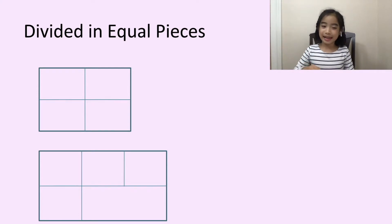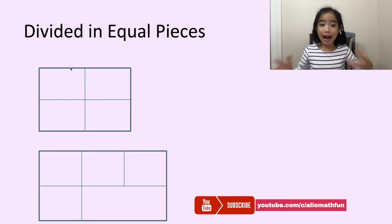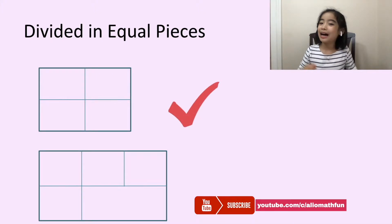Which one is divided into equal pieces? First, let's look at the first rectangle. The horizontal line and the vertical line meet down in the center of the rectangle. From our eyes, we see that it looks like it has been divided into four equal pieces. So, let's call this correct.